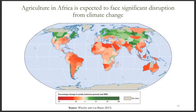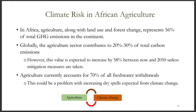Agriculture in Africa is expected to face significant disruption from climate change. As shown in the figure, agriculture yields are expected to decline by 15% to 35% between now and the year 2050. In Africa, agriculture along with land use and forest change represents 56% of total greenhouse gas emissions. Globally, the agriculture sector represents 20% to 30% of total greenhouse gas emissions, which is expected to increase significantly by 2050. Agriculture is also a major consumer of water, currently accounting for 70% of all freshwater withdrawals.